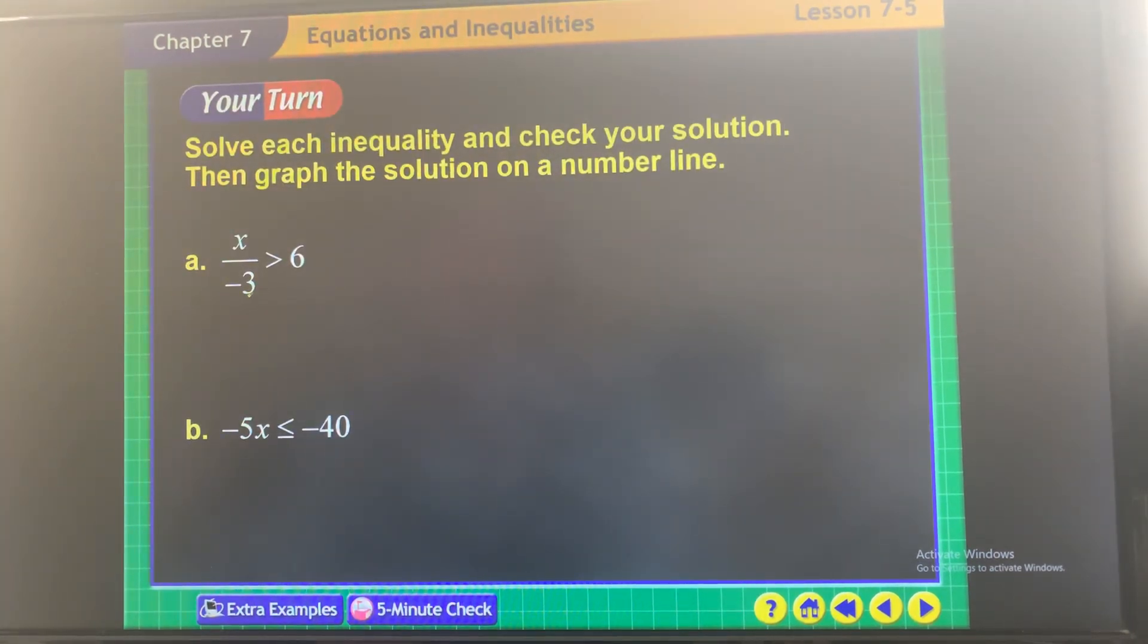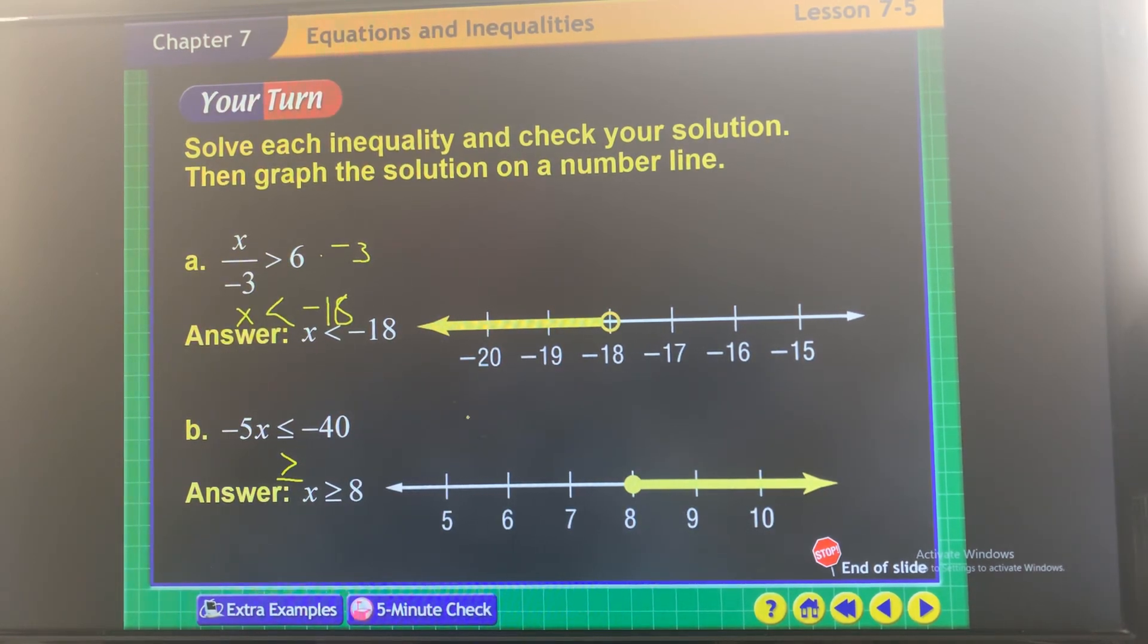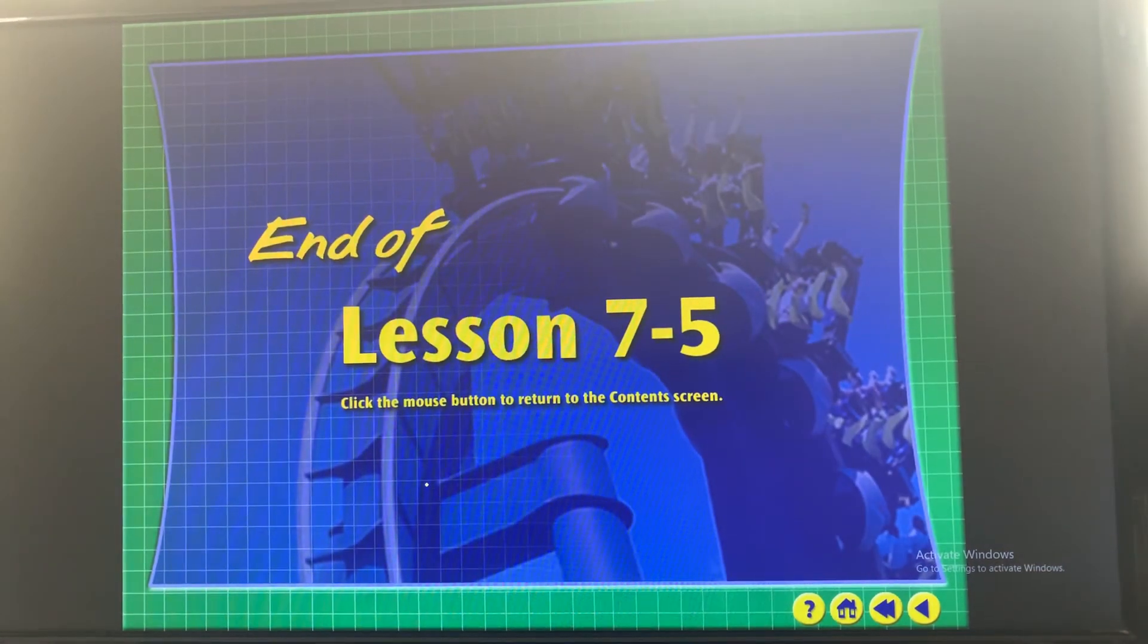Will we flip? Yep, because you're going to multiply by negative 3, so flip away. So it ends up going this way and x is everything less than negative 18. You're going to flip? Yep. So this one's going to be greater than or equal to, and it's going to be x is everything greater than or equal to. And there's your graphs, excluded to the left, included to the right. And that's it for 7.5.